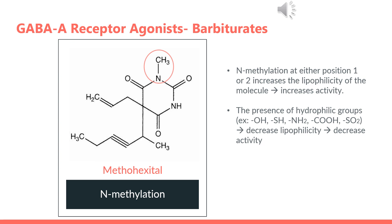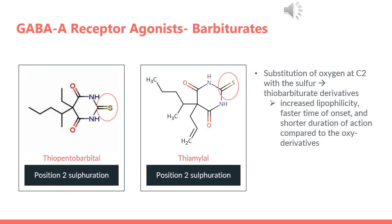For N-substitution, N-methylation at either position 1 or 2 increases the lipophilicity of the molecule and so increases its activity, as can be seen in the example where methylhexethyl has its N at position 1 methylated. Modification of the position 2 oxygen of the barbiturate backbone with a larger sulfur atom yields a thio-barbiturate derivative, which has increased lipophilicity, faster time of onset, and shorter duration of action compared to the oxy-derivatives.